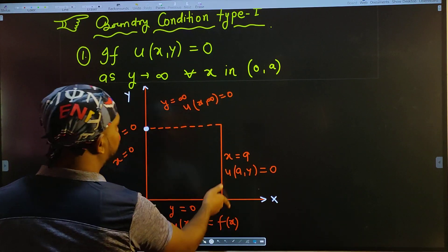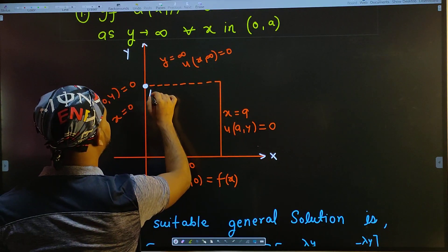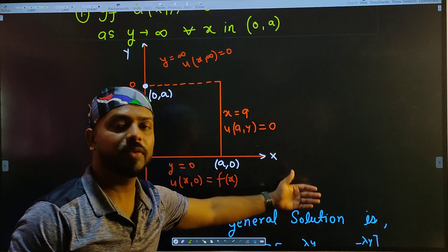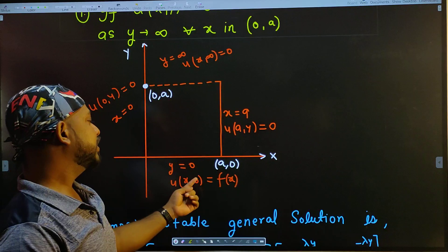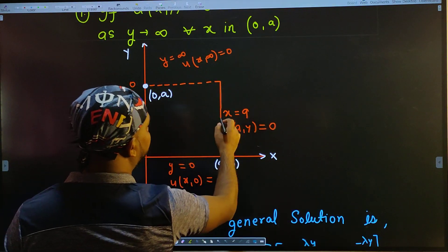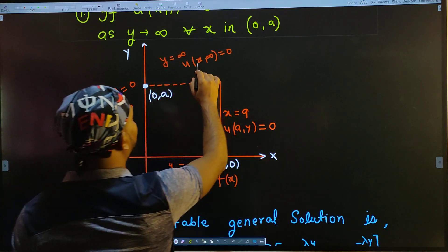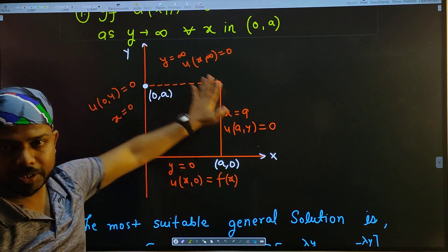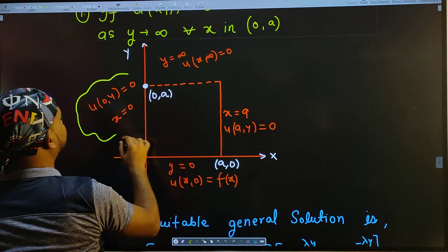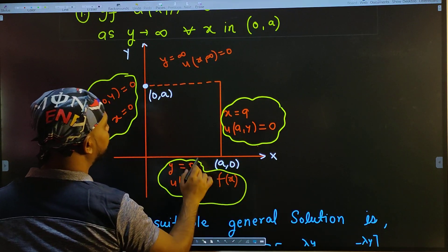So the figure looks like this. Point (0, a) and point (a, 0). Now see all the equations. The x-axis has equation y = 0, and u(x, 0) = f(x). At x = 0, u(0, y) = 0. At x = a, u(a, y) = 0. And as y tends to infinity, u(x, ∞) = 0. These are all the boundary conditions. This is the BC for the left-hand side, right-hand side, bottom, and top respectively.